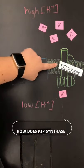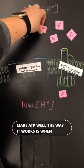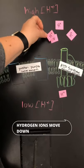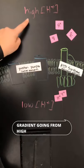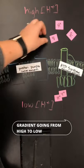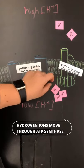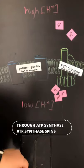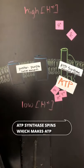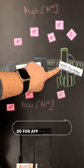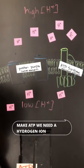How does ATP synthase make ATP? The way it works is when hydrogen ions move down their concentration gradient, going from high to low, as these hydrogen ions move through ATP synthase, ATP synthase spins, which makes ATP. So for ATP synthase to make ATP, we need a hydrogen ion gradient.